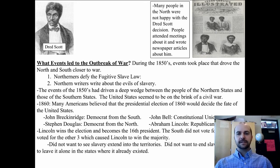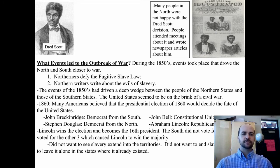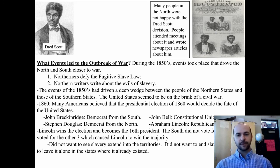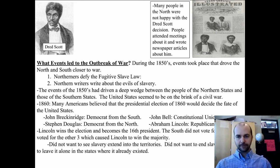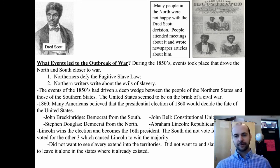In 1860, many believed the presidential election would decide the fate of the United States. Four candidates ran: John Breckinridge, a Democrat from the South supporting slavery; Stephen Douglas, a Democrat from the North who didn't want to touch slavery; John Bell of the Constitutional Union Party; and Abraham Lincoln of the Republican Party, who was openly against slavery. Lincoln won because the South split its votes among the other three candidates, giving Lincoln the majority.